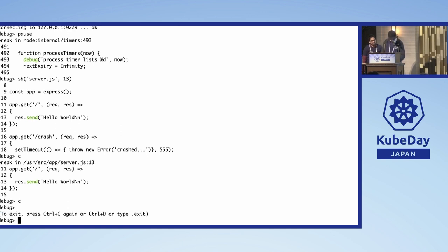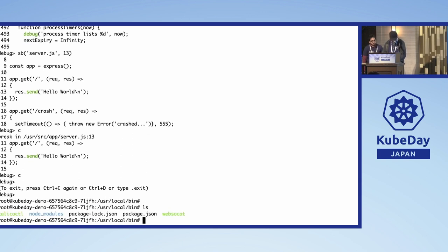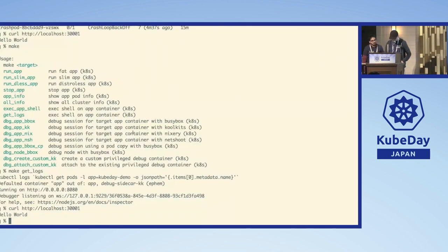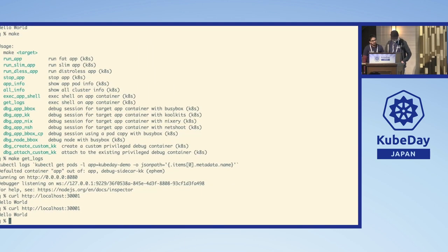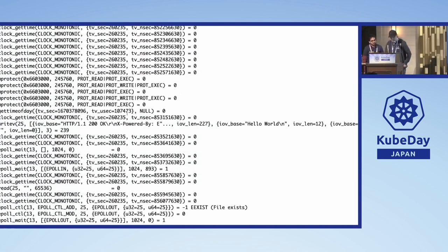I'm going to try another approach: using strace for a lower-level debugging session. strace is now connected to the Node application. After sending a request, we got a whole bunch of output including a response written from the application.